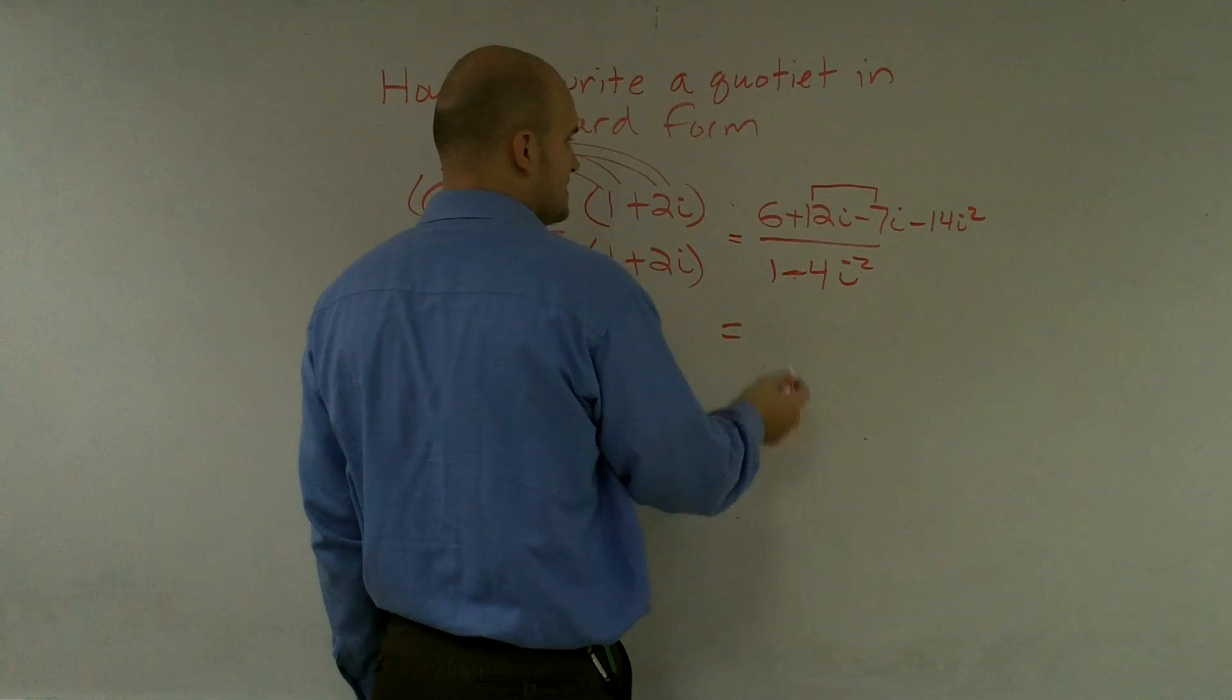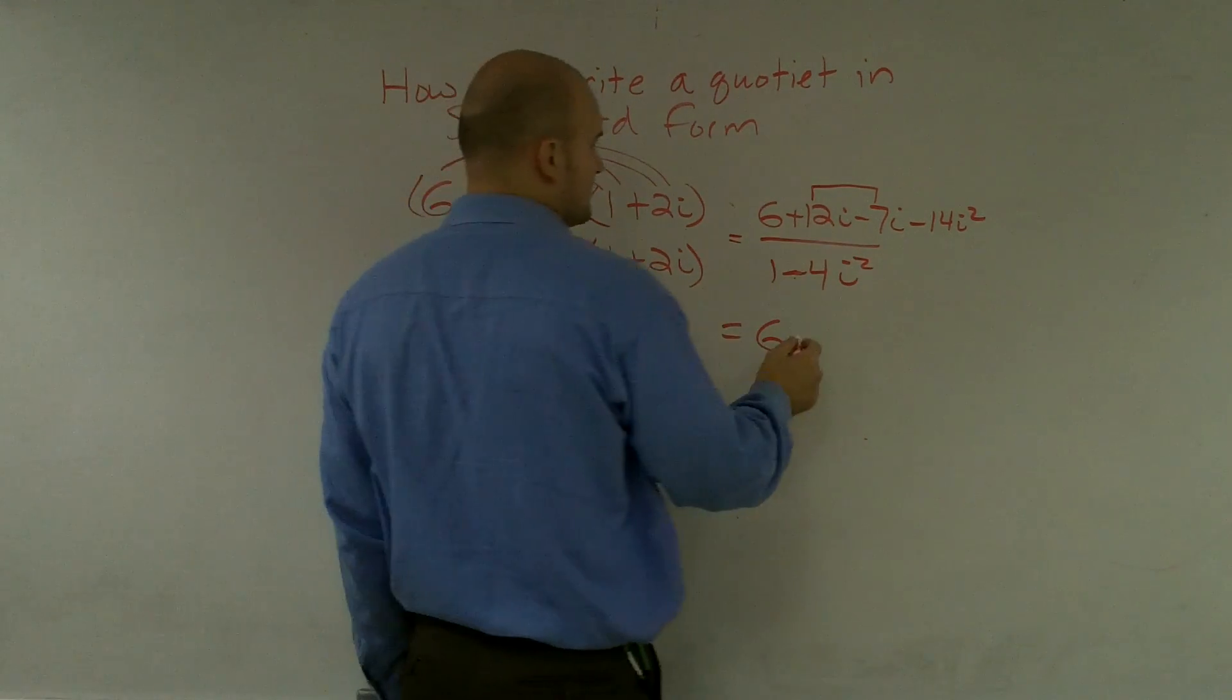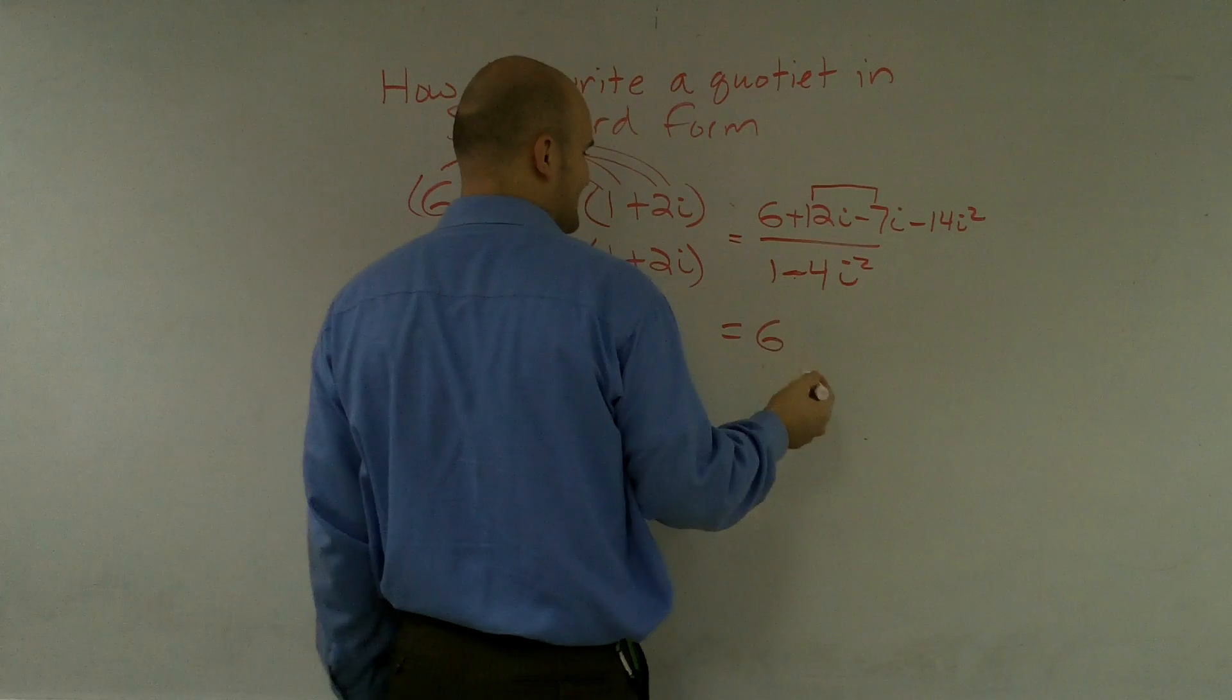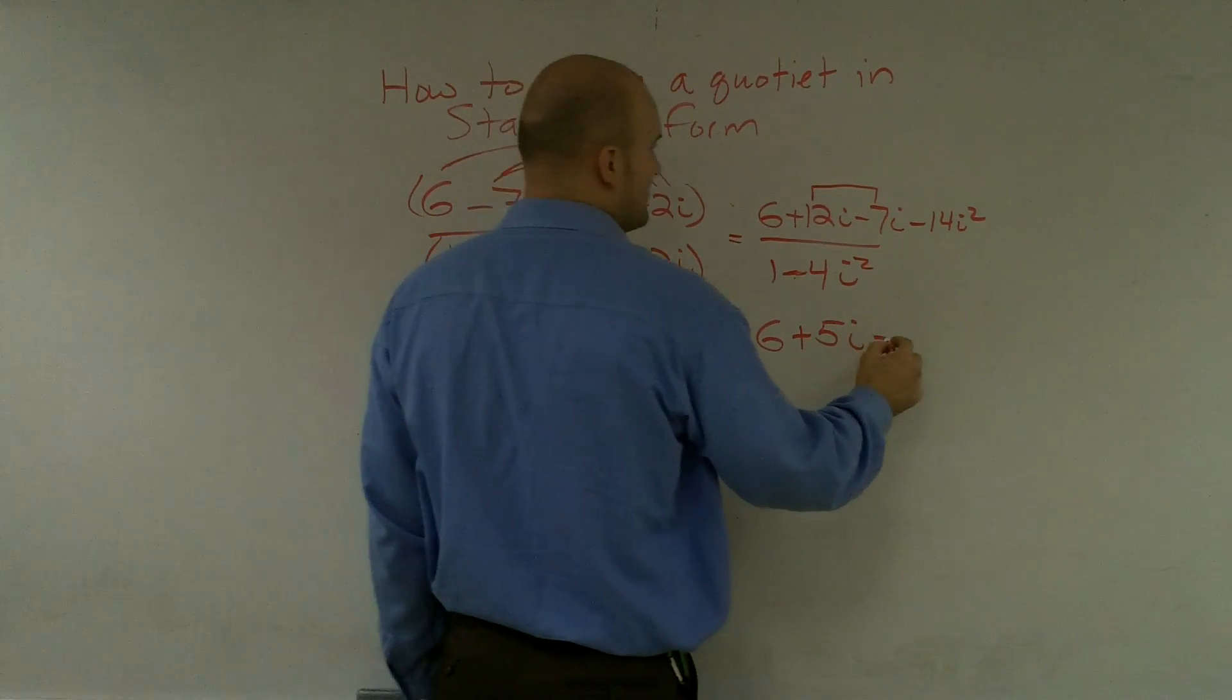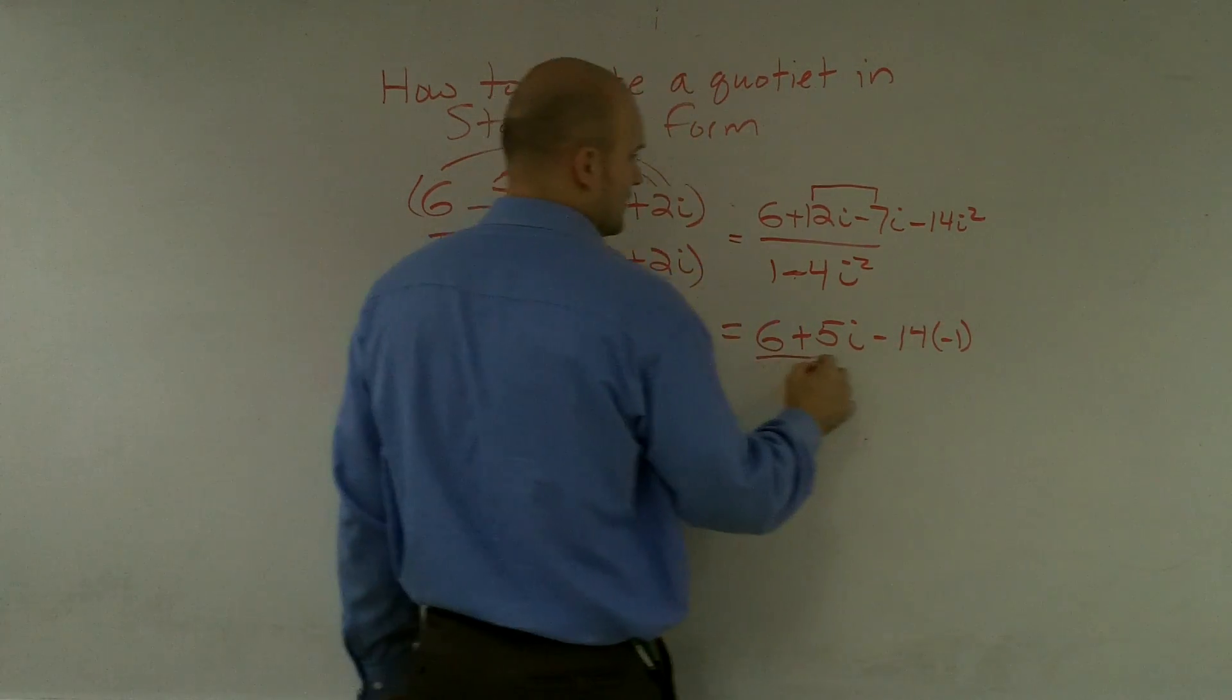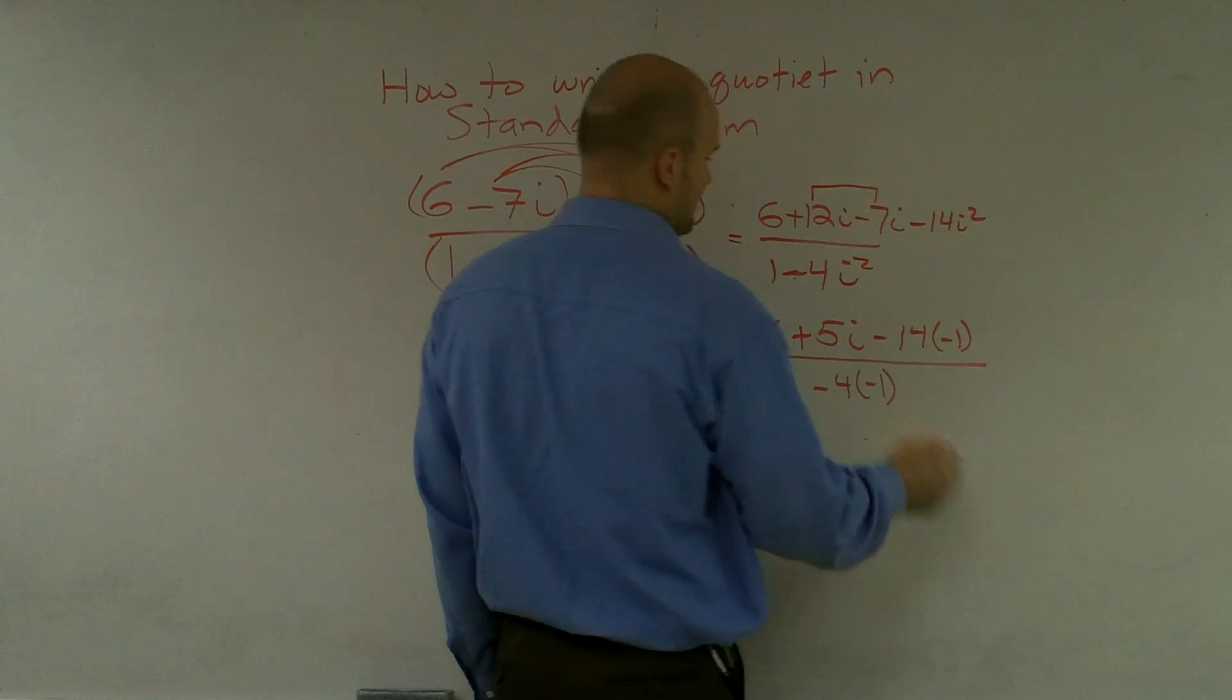So 6, 12i minus 7i is 5i. And then we'll have minus 14 now times a negative 1, all over 1 minus 4 times a negative 1.